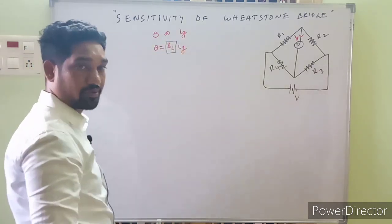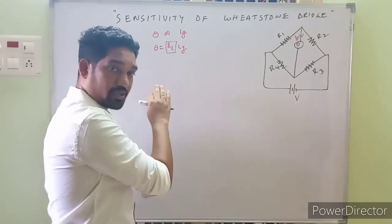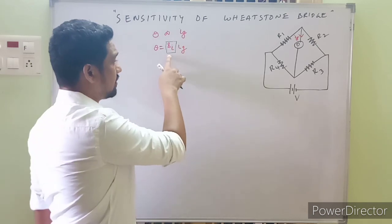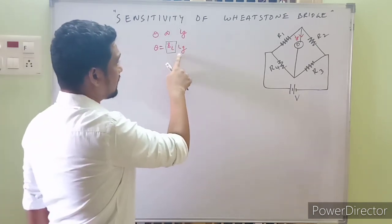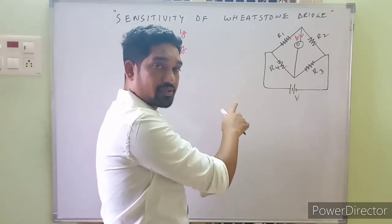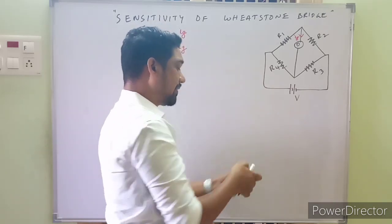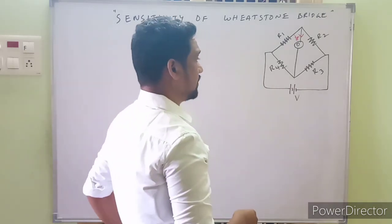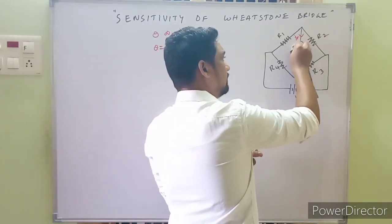Now we express the bridge sensitivity SB in terms of the current sensitivity of the galvanometer. To evaluate IG, we need the Thevenin's equivalent circuit of the bridge, and for that we need the equivalent resistance.